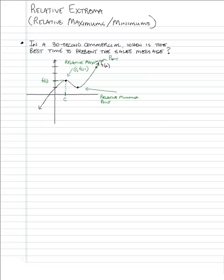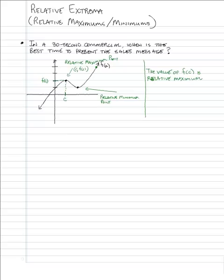Here's the way we make statements about this. In this particular graph, we would say the value of f of c — so that's a y value and it's a number — is a relative maximum, and it occurs at the x value of c, at x equals c. We might also say that the point c comma f of c is a relative maximum point.